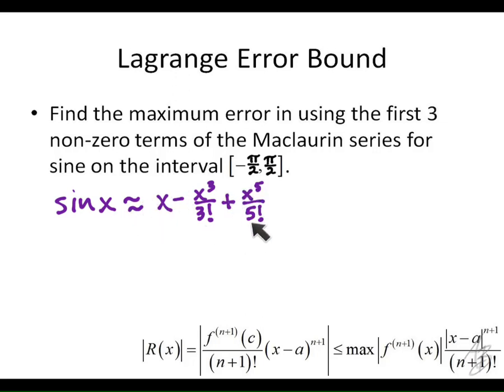We want to know how accurate this is going to be on the interval from negative pi over 2 to positive pi over 2. We know that if we get far enough away from zero it's not going to be accurate at all. If I plug in a really big number like 100 for x, I'll get 100 to the fifth power over 5 factorial and numbers way outside the range of sine. As long as I'm close enough to zero I'll be close to the actual value, so I want to know exactly how close.